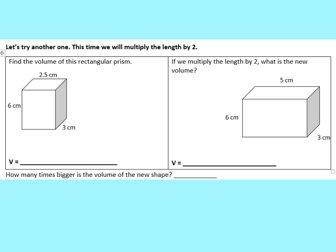Go ahead and try this example. Find the volume of this rectangular prism using V = length × width × height, and then figure out what it's going to be if you multiply the length by 2. We're going to see how much bigger the volume of this shape is. Pause the video, try it on your own, and see if you can come up with the conclusion.